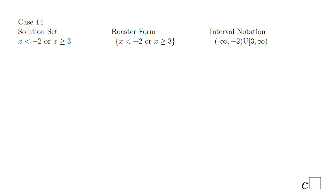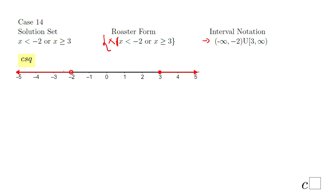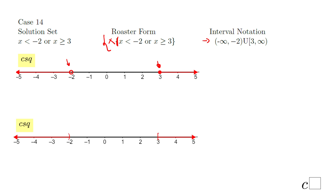The last case: x less than negative 2 or x greater or equals 3. Roster form: x when x is less than negative 2 or x is greater or equals 3. The interval notation: parenthesis at negative 2 because there is no equal, bracket at 3 because we have equal. Graphically: empty dot at negative 2, full dot at 3. The second way uses parenthesis and bracket, like in the interval notation. If you enjoyed this lesson, don't forget to click the like button and come back to C-Squared for more help. Thank you.